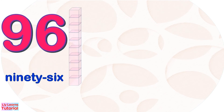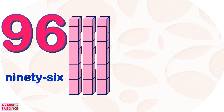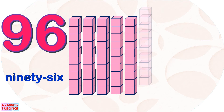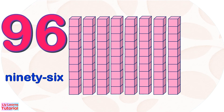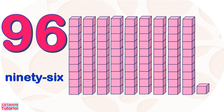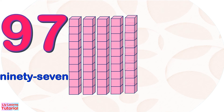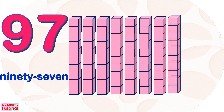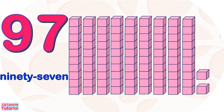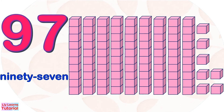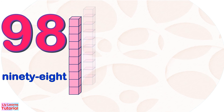Ninety-six. Ten, twenty, thirty, forty, fifty, sixty, seventy, eighty, ninety, ninety-one, ninety-two, ninety-three, ninety-four, ninety-five, ninety-six. Ninety-seven. Ten, ninety-two, ninety-three, ninety-four, ninety-five, ninety-six, ninety-seven. Ninety-eight. Ten, thirty, forty, fifty.